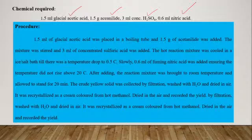The procedure: we will add glacial acetic acid in a boiling tube, and then add acetanilide into it. The mixture was stirred, and then we add concentrated sulfuric acid into the above mixture. The hot reaction mixture was cooled in an ice-water bath till there was a temperature drop to 5 degrees Celsius.